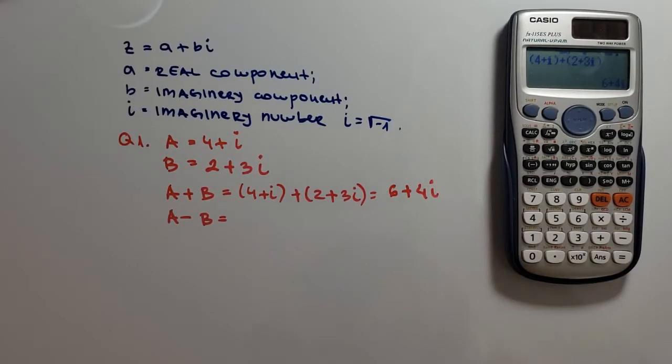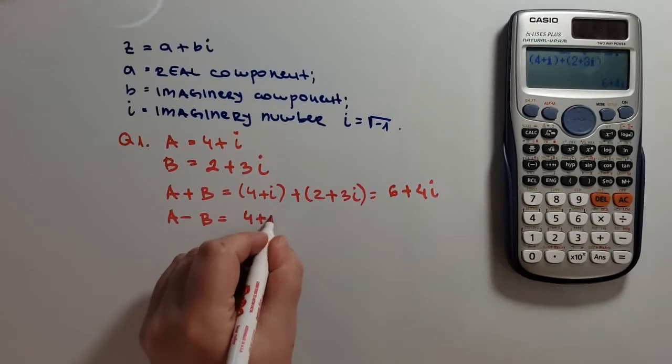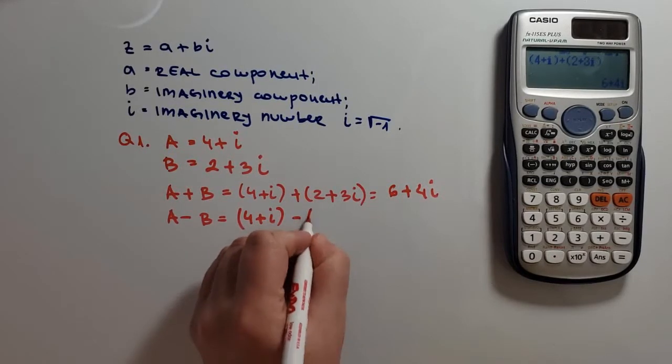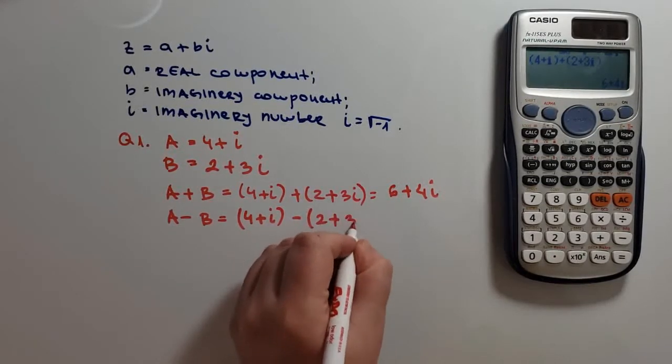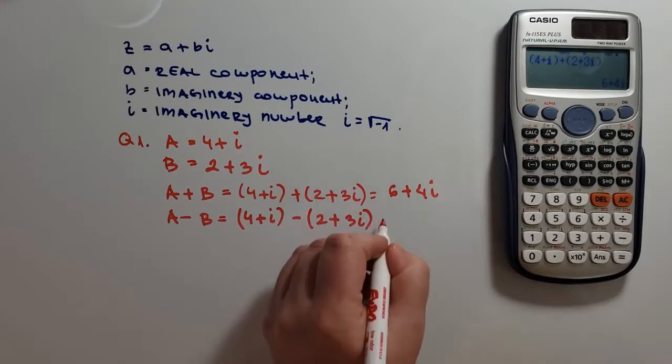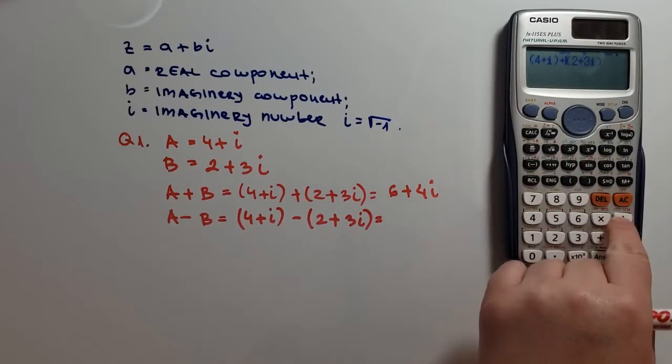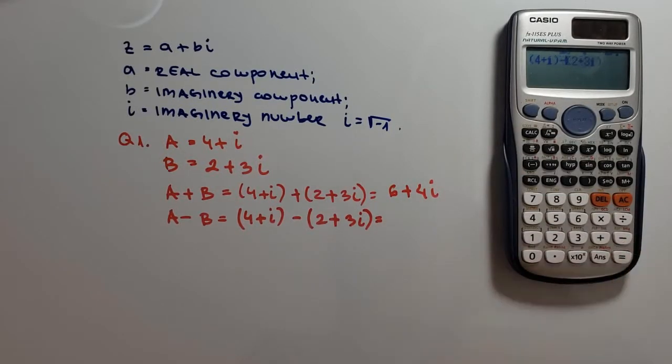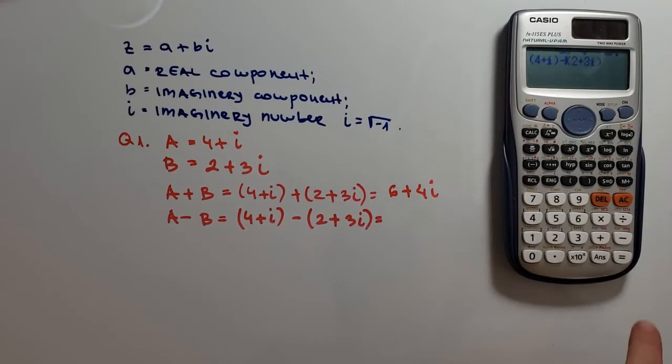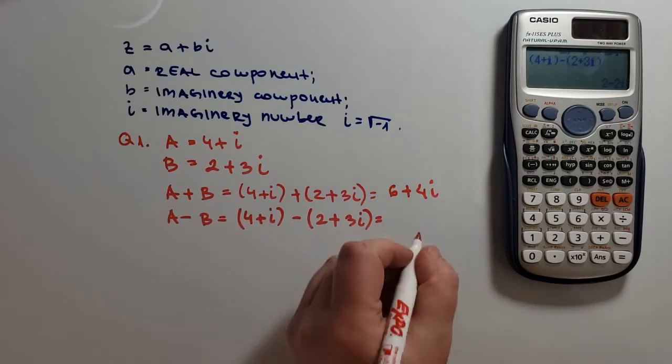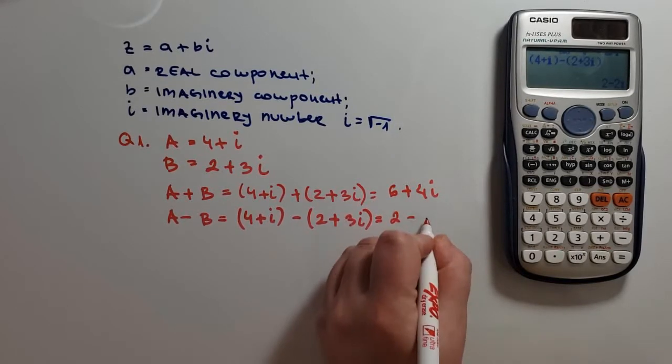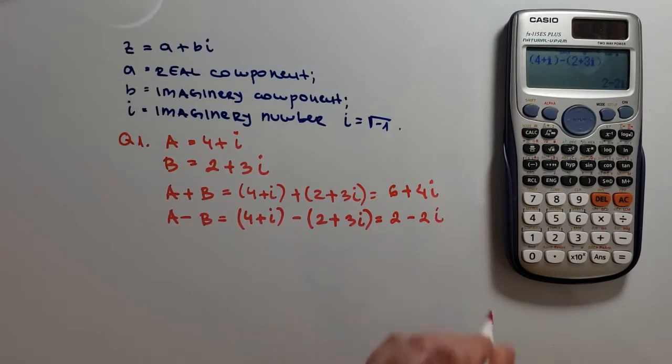For the subtraction, we have 4 plus i minus 2 plus 3i. I will just simply go left, I will delete the plus sign, and I will insert the minus sign here. And we have 2 minus 2i as a result.